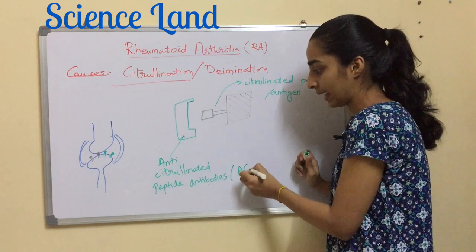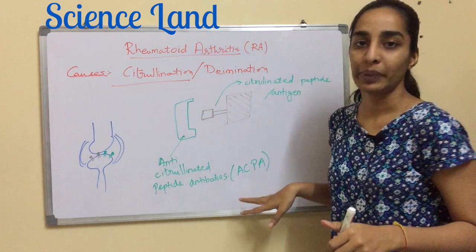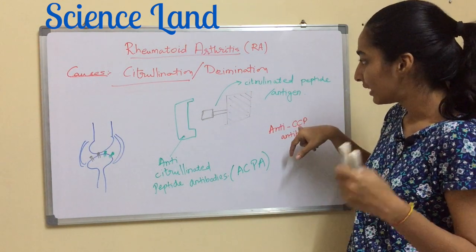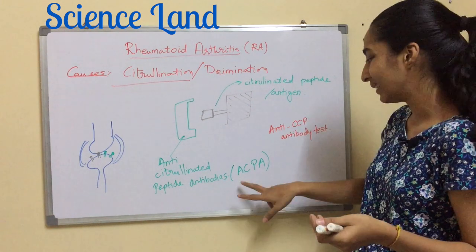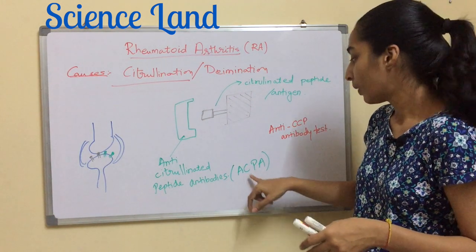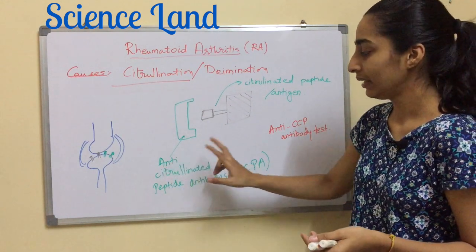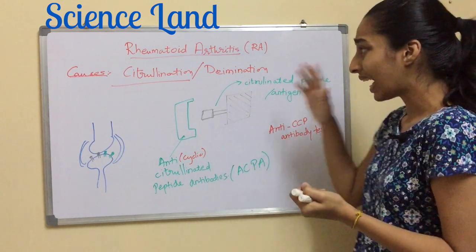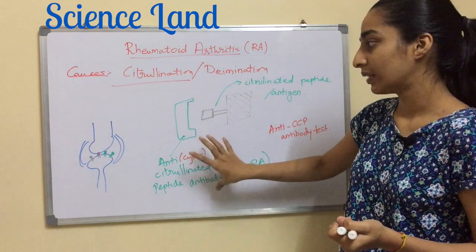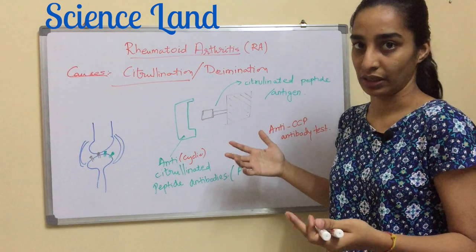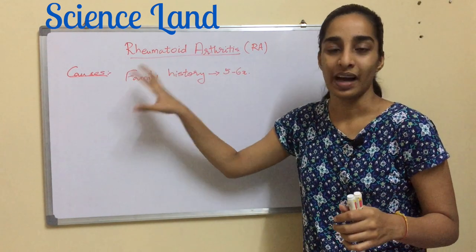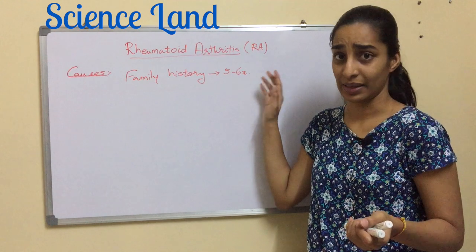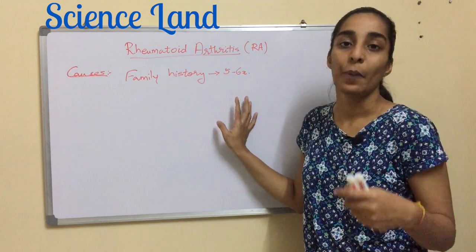These antibodies working against the citrullinated peptide are known as anti-citrullinated peptide antibodies, or ACPA. ACPA is very important during diagnosis. The test is called anti-CCP — anti-cyclic citrullinated peptide antibody test. There are two names: ACPA and anti-CCP antibodies. This also forms the basis of a diagnostic test. Another cause of RA is family history — any person who has RA in the family is five to six times more likely to develop the disease in coming generations.